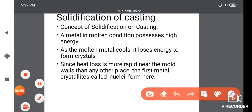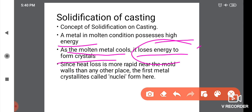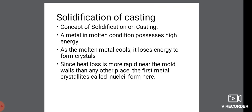The metal in molten condition possesses high energy. As the molten metal cools, it loses energy to form crystals. The temperature decreases from higher to lower — this means there is energy loss. Since heat loss is more rapid near the mould walls than anywhere else, the first metal crystallites called nuclei form there. At the same time, crystal formation begins.